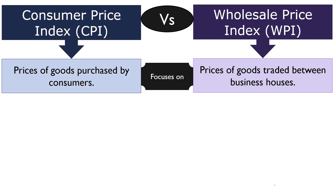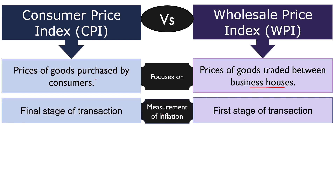In consumer price index, the government keeps a track on the price of goods purchased by the consumers. As against, in wholesale price index, the government keeps a track on the prices of goods traded between business houses. In wholesale price index, the inflation is measured by keeping an eye on the price paid at the first stage of the transaction. Conversely, the price paid at the final stage of the transaction acts as a base to measure the inflation in case of consumer price index.